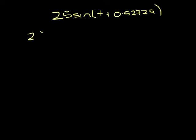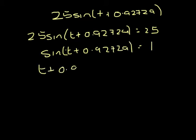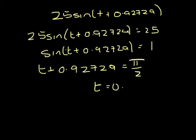Part 2, we're asked for the maximum value, and the maximum value that sin can take is 1. So the maximum value of this is 25, i.e. when sin(t + 0.92729) equals 1. That occurs when the angle is 90 degrees, which in radians is π over 2. So t will be π over 2 minus 0.92729, which is 0.6435, or 0.644 seconds to 3 sf.